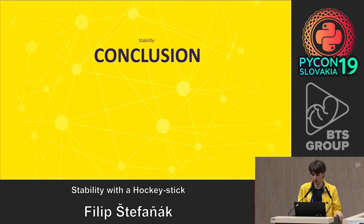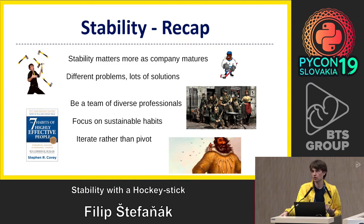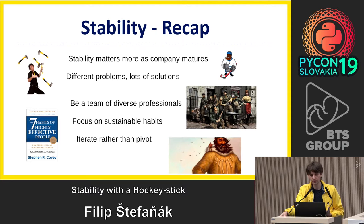That was a very short overview of what stability could look like. Let me recap in a few points. First, stability matters more as the company matures — it's not so important in the beginning. Then there are many problems you will face and a variety of solutions. But there are too many of them, and to solve them as an organization you need to be a team of diverse professionals, focus on sustainable habits to keep that professionalism going. And finally, the best way is to focus on iteration rather than pivoting and complete re-architectures.